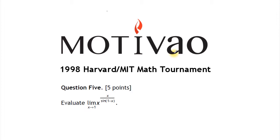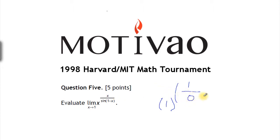So let's just plug in the numbers and see what we get. Well, we get one to the power of one over sine of one minus one. Sine of zero is zero. So this is just one to the power of infinity — this is in one of the indeterminate forms, one over infinity, so this limit has to be manipulated to be able to calculate.